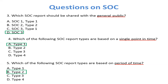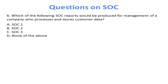Question 6: Which of the following SOC reports would be produced for the management of a company that processes and stores customer data? There are two key points: number one, management; and number two, customer data. Management uses SOC 2 reports. Customer data means it is talking about privacy — we have to maintain privacy for customer data. CIA means cybersecurity or IT, so the correct answer is B, SOC 2.